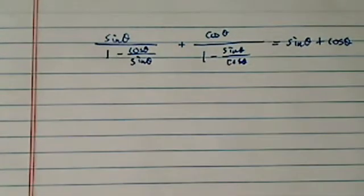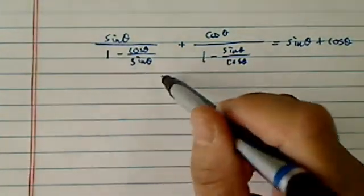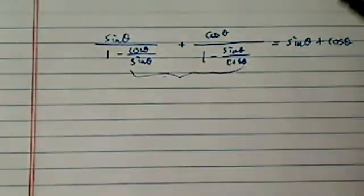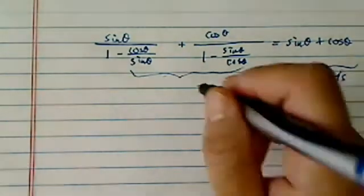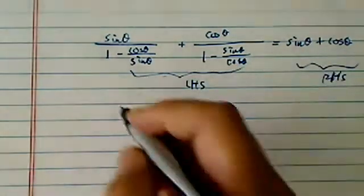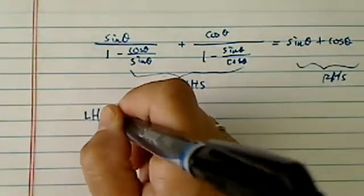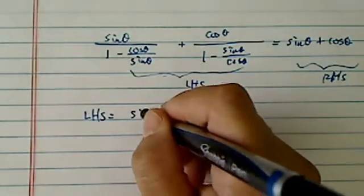Now if you take a look at this equation, the left hand side is far more complicated than the right hand side. Okay, so chances are what you want to do is you want to start with a complicated part. Therefore you can do more simplification here. Let's copy it down.